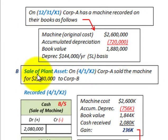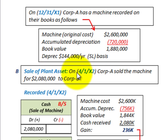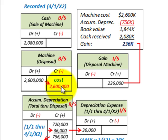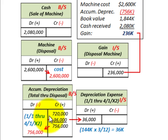Now let's look at how we record the sale of a plant asset, using the same machine example with its cost, accumulated depreciation, book value, and depreciation per year. On 4/1/X2, Corporation A sold the machine for $2,080,000 to Corporation B. We debit cash received on the sale for $2,080,000, then credit the machine at its cost of $2,600,000 to remove it from the books. Accumulated depreciation at the beginning of the year was $720,000.